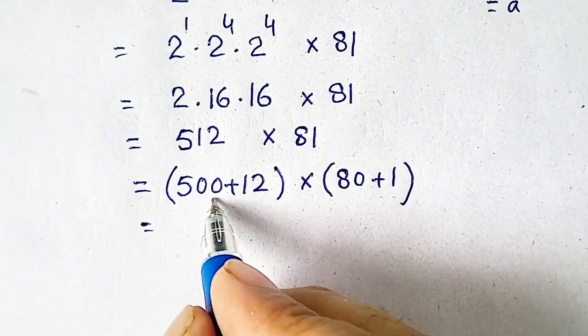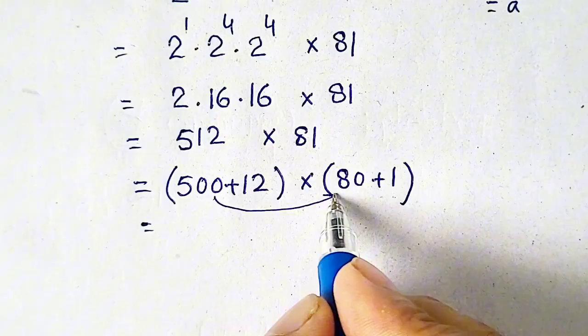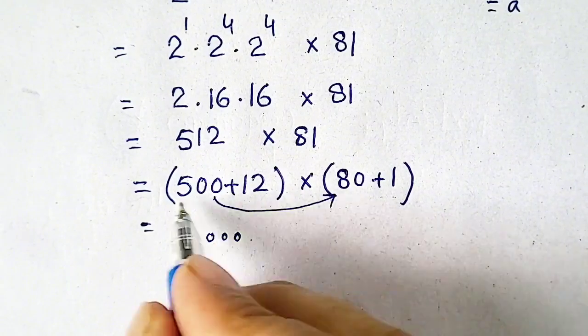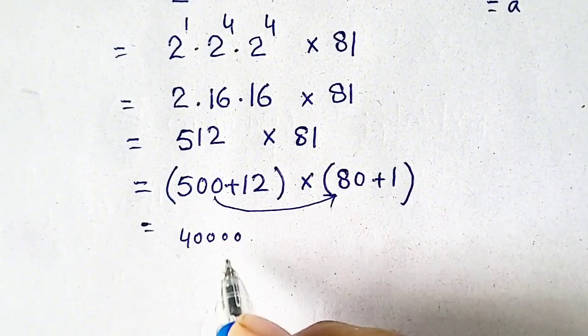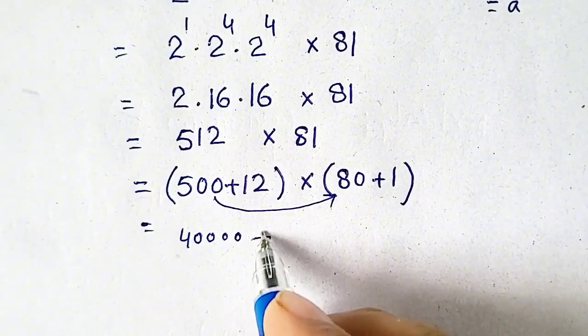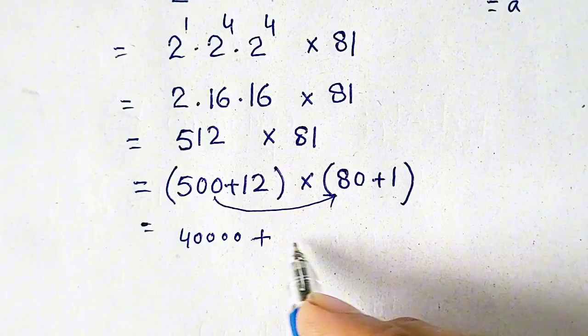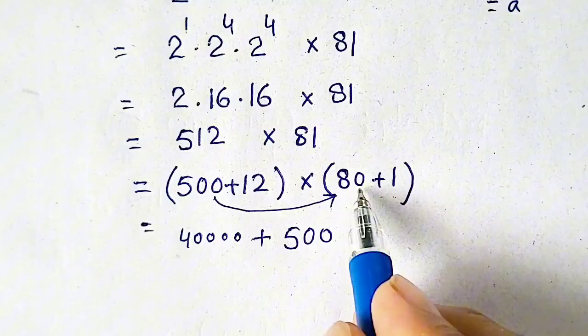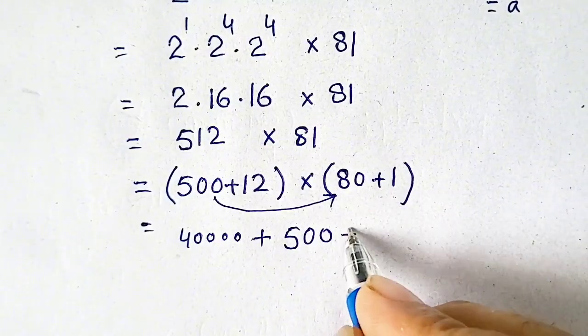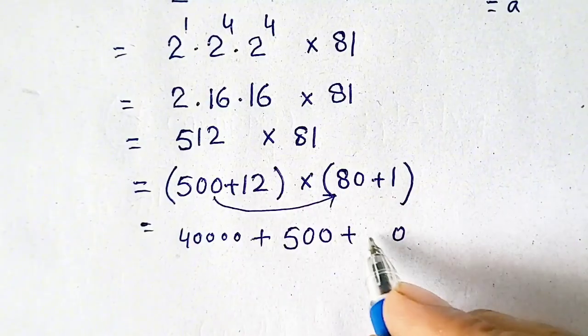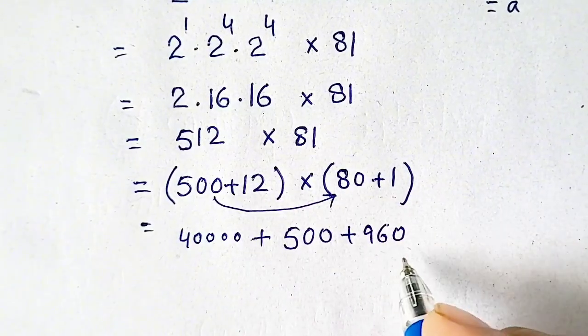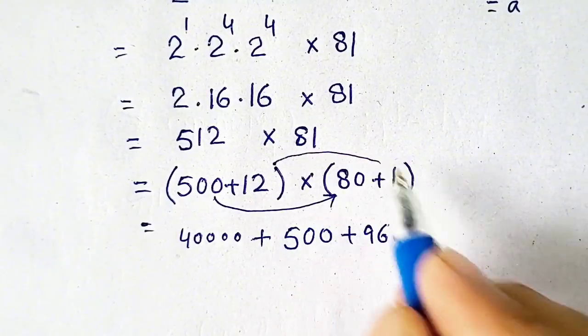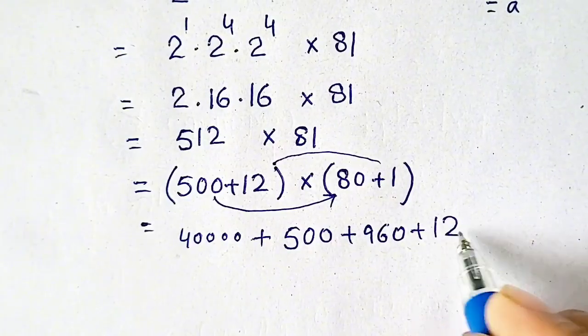500 multiplied by 80: we will get 0, 0, 0 and 8 fives are 40. Now 500 is multiplied by 1, so it will be 500. Now 12 is multiplied by 80, so 0 as it is, and 12 eights are 96, so it will be 960. And 12 is now multiplied by 1, so it will be 12.